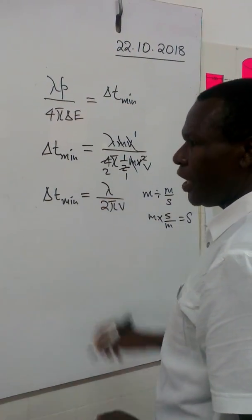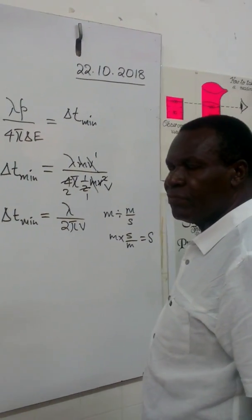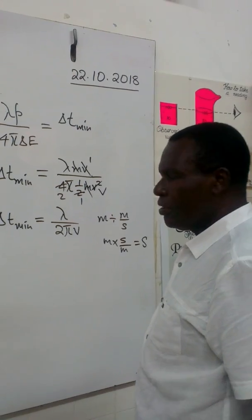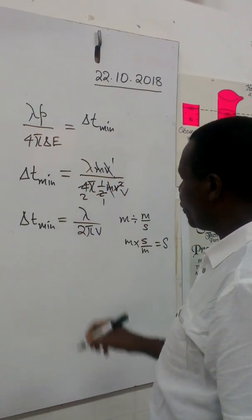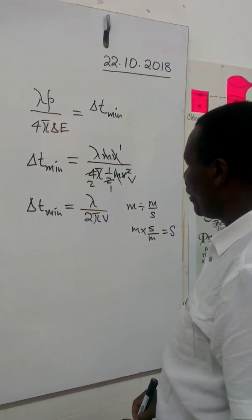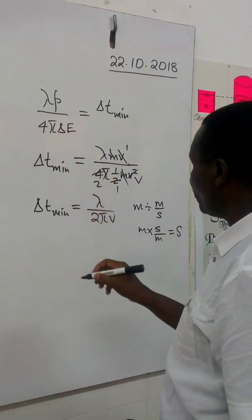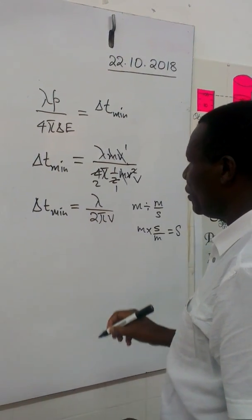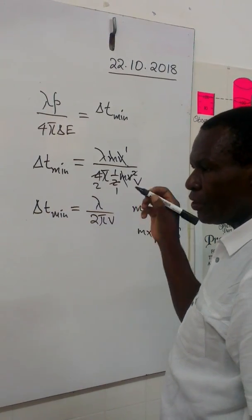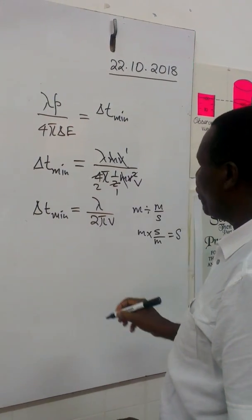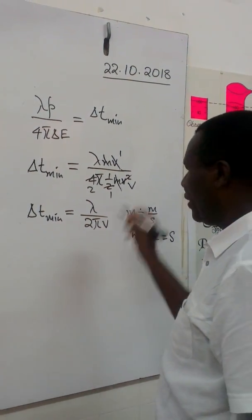So time is a wave, which is directly proportional to its wavelength and inversely proportional to its velocity, with a proportionality constant of the reciprocal of 2pi.